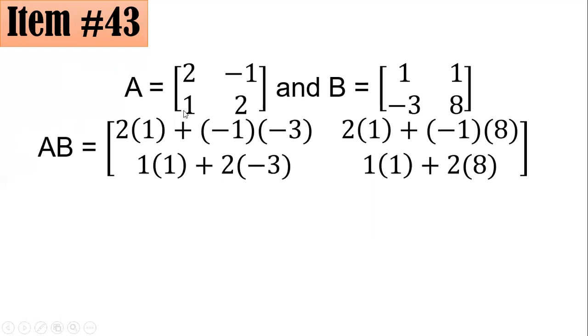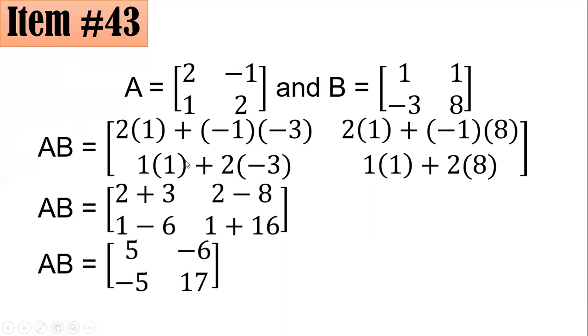And lastly, the second row of A will be multiplied with the second column of B. So you have 1 times 1 plus 2 times 8. Simplifying each you will have 2 plus 3, 1 minus 6, 2 minus 8, and 1 plus 16. It will become AB equals 5 negative 5, negative 6, 17. If you answered D, great job.